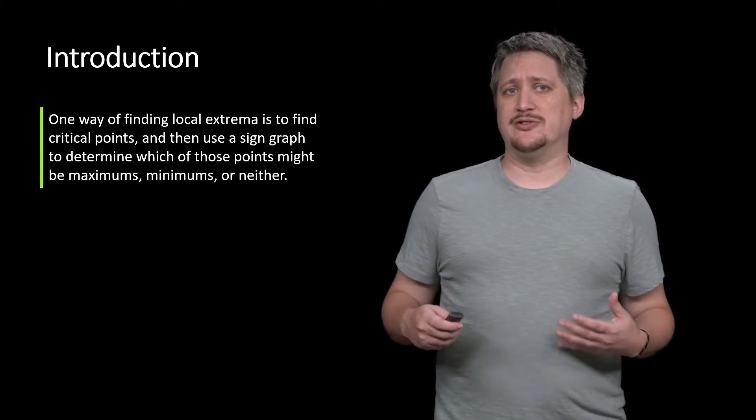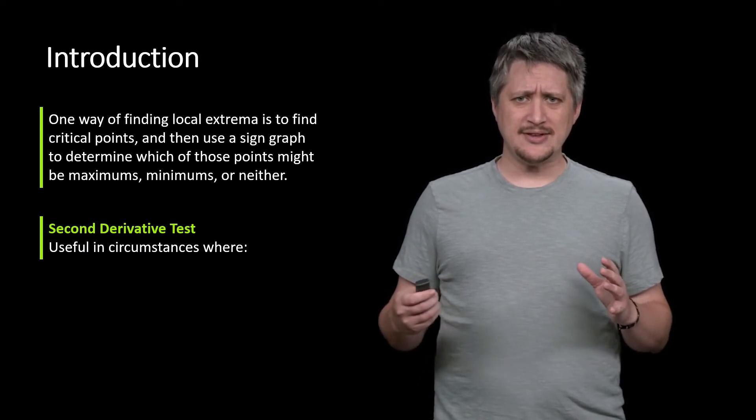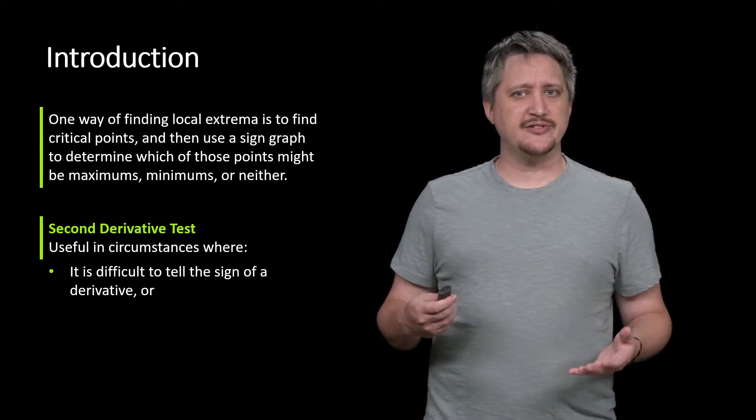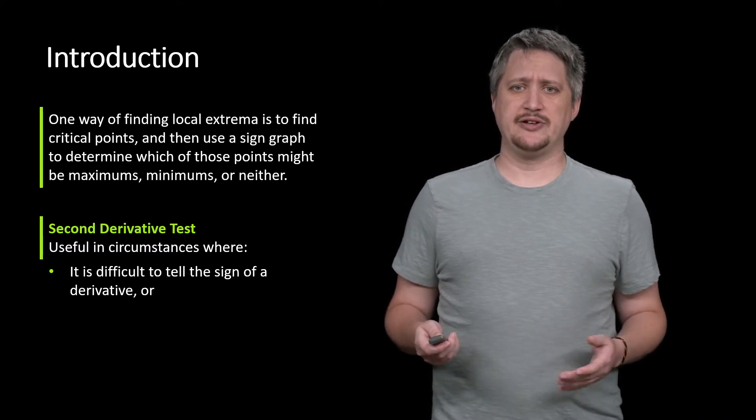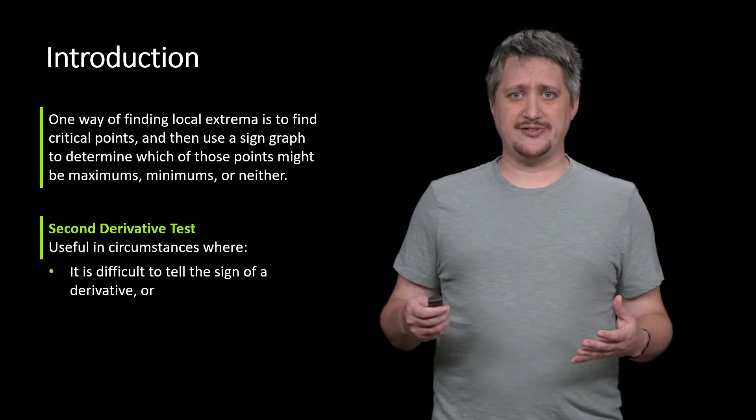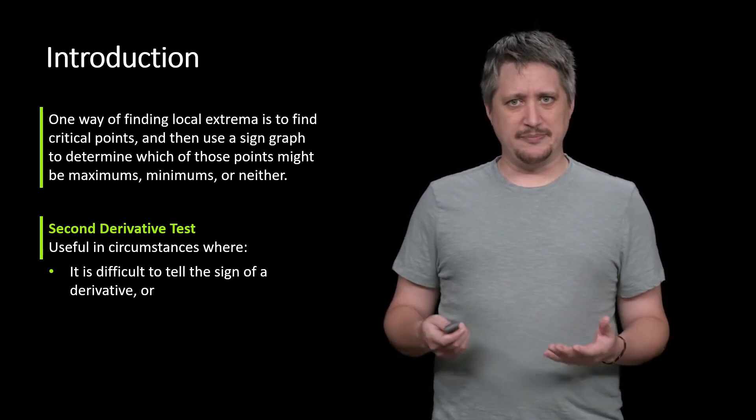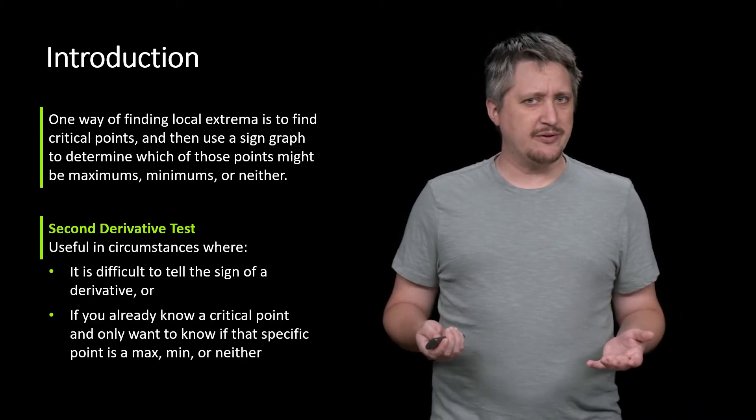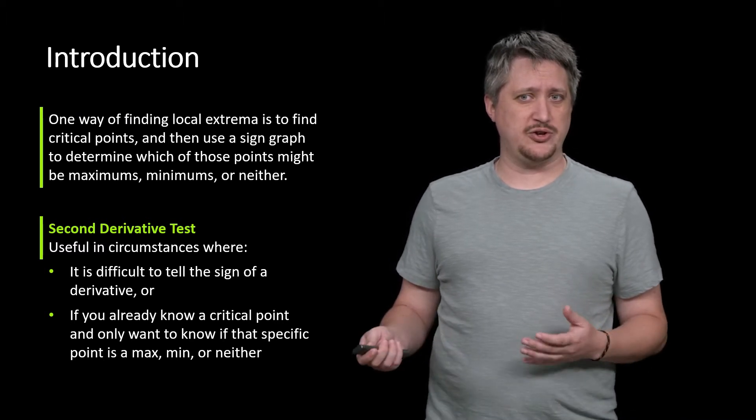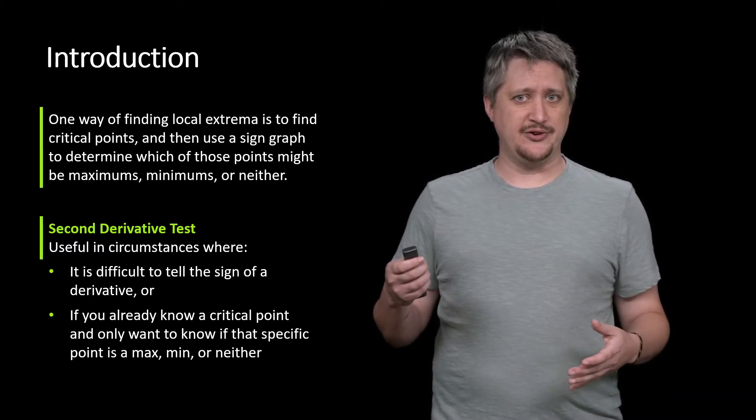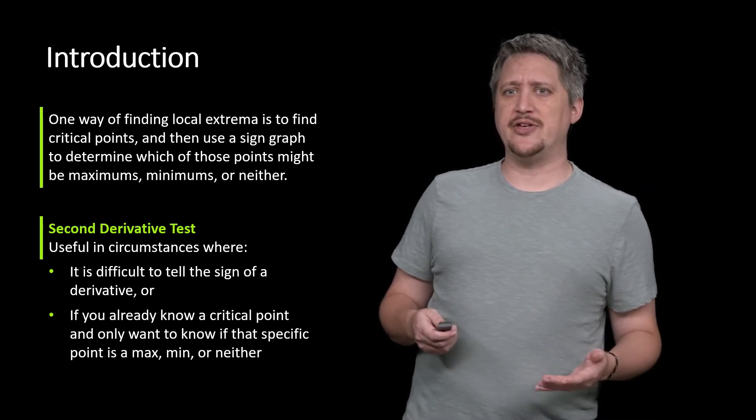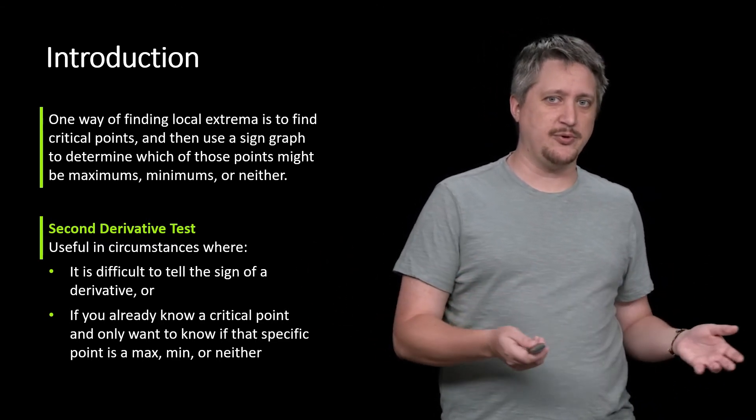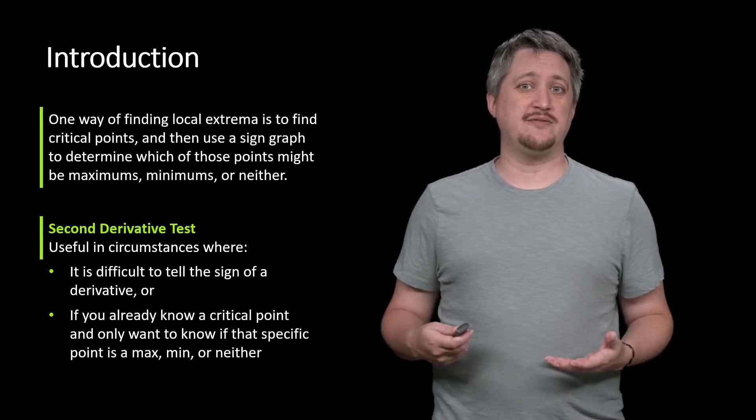We can apply something called the second derivative test. The general areas where this is useful are if it's difficult to tell the sign of a derivative, or maybe for whatever reason you already know the critical point but you don't actually know whether it is a maximum or minimum. Instead of going through all the work of trying to find the derivative and do the factoring to get the sign chart to check the point, the second derivative test can be a faster way of going about this.